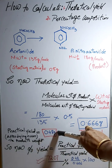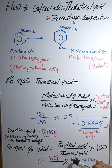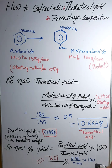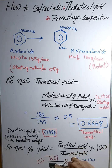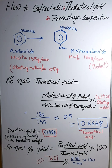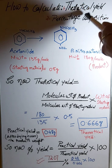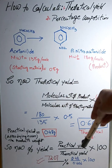The formula for percentage yield is: percentage yield equals practical yield divided by theoretical yield, multiplied by 100. So: 0.48 divided by 0.666, multiplied by 100 gives approximately 72.07%. Today you have learned how to calculate the theoretical yield and the percentage yield of your prepared organic compound, para nitro acetanilide.